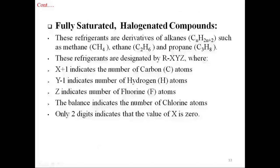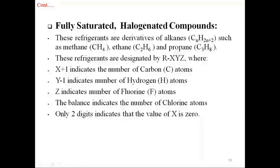Fully saturated compounds. These refrigerants are derivatives of alkanes (CₙH₂ₙ₊₂), such as methane (CH₄, N=1), ethane (C₂H₆), and propane (C₃H₈). These refrigerants are designated by Rxyz, where x+1 indicates the number of carbon atoms, y−1 indicates the number of hydrogen atoms, z indicates the number of fluorine atoms, and the balance indicates the number of chlorine atoms. Only two digits indicates that the value of x is 0.